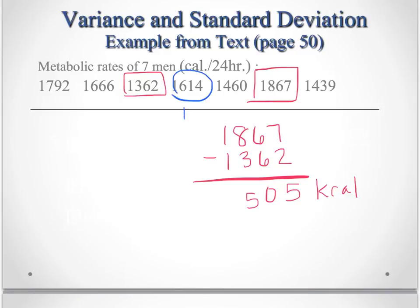The median is 1614. I'm sorry, this is not in order. We can't call that the median. We have to put this in order. So to do that would be 1362, 1439, 1460, 1614, 1666, 1792, and 1867.